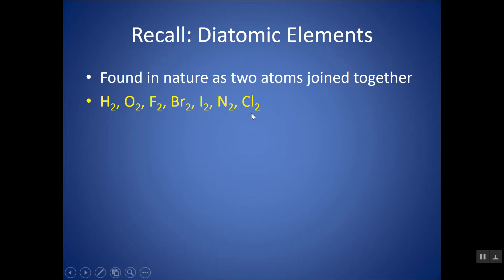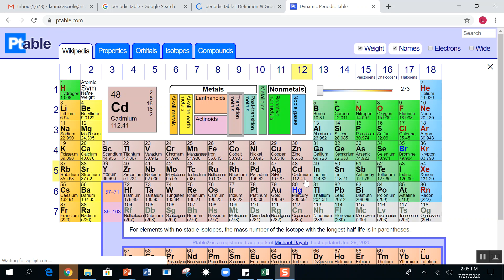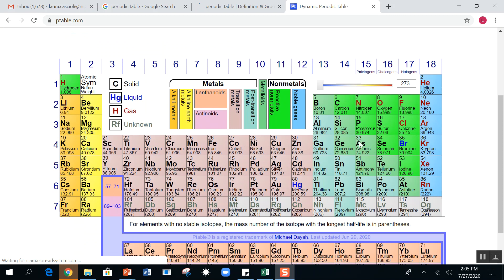I like to remember it as Hofbrincl, H-O-F-B-R-I-N-C-L. You could also look at your periodic table, and if you're more of a visual person, you could see that it makes a seven on your periodic table, N-O-F-Cl-Br-I, and remembering that also hydrogen, because there are seven total.